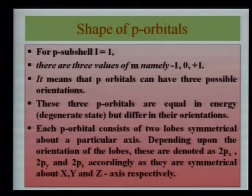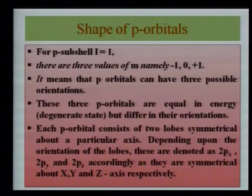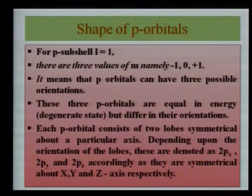The P orbital can have three possible orientations. These three P orbitals are equal in energy — they are degenerate — but differ in their orientation. Each P orbital consists of two lobes symmetrical about a particular axis, denoted as 2px, 2py, and 2pz, symmetrical about the x, y, and z axes respectively.